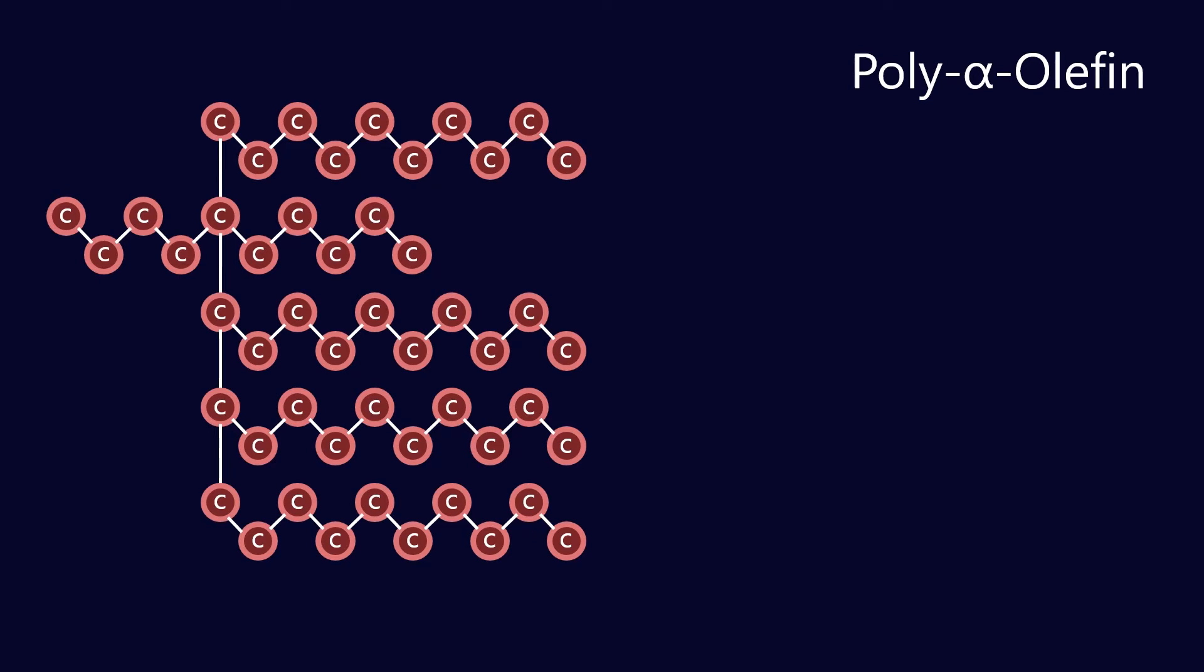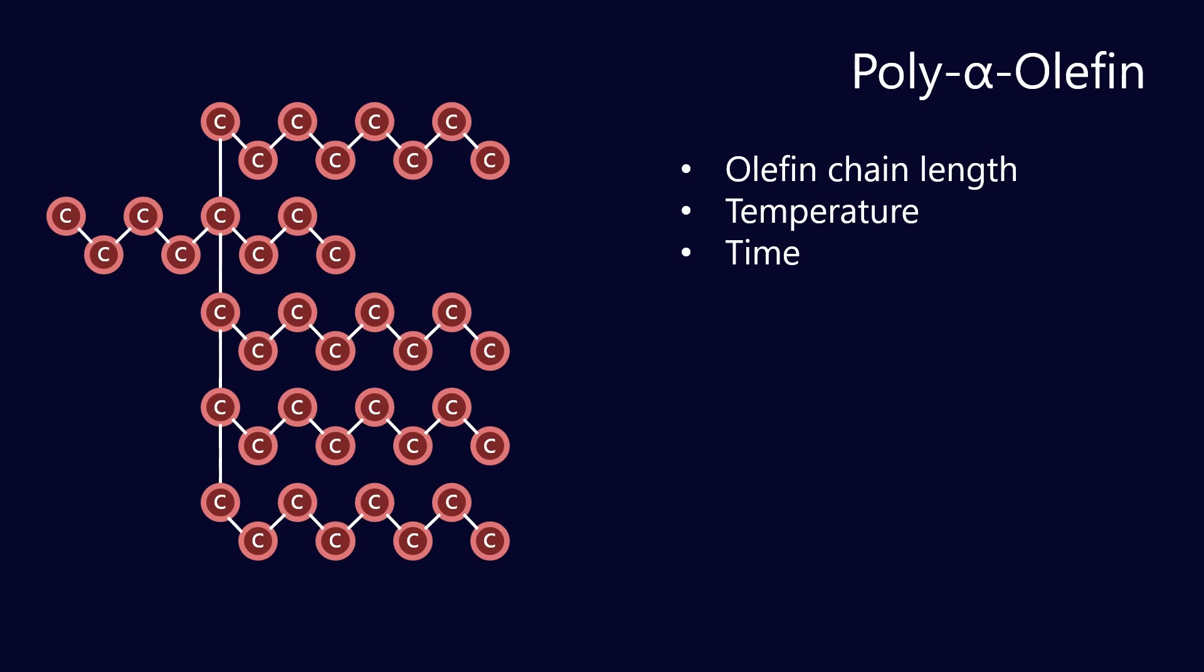Now let's look at all of those steps in the reaction and determine what do we have control over. One thing is the olefin chain length. I've used the example where we're using decene as a starting feedstock. Doesn't necessarily need to be the case. If we had started with octane for example you would get shorter branches off the poly alpha olefin backbone. The other thing that we have control over is the temperature and the time of the catalytic reaction. If we were to take the reaction a bit longer it would just start to continue building that chain. And that's how you add molecular weight and viscosity.